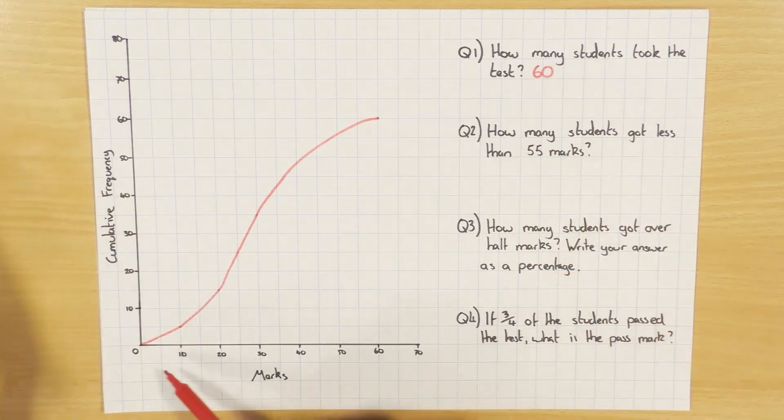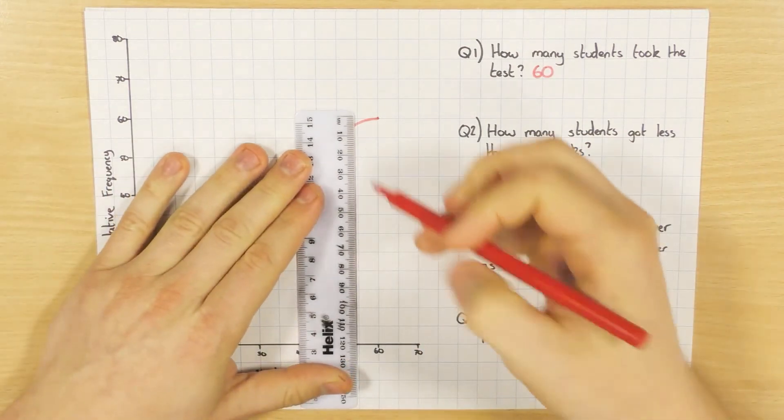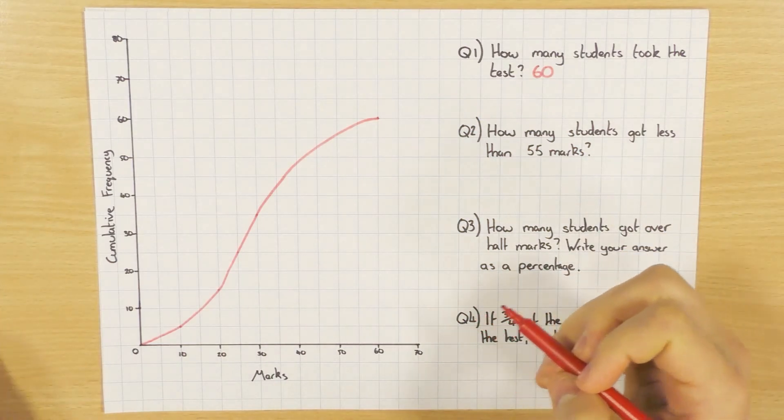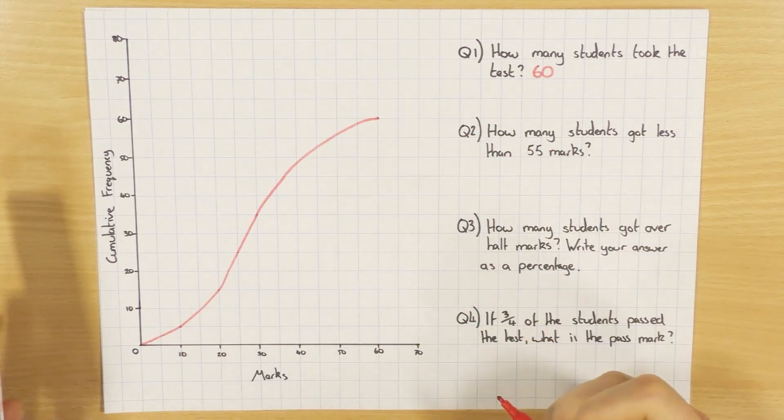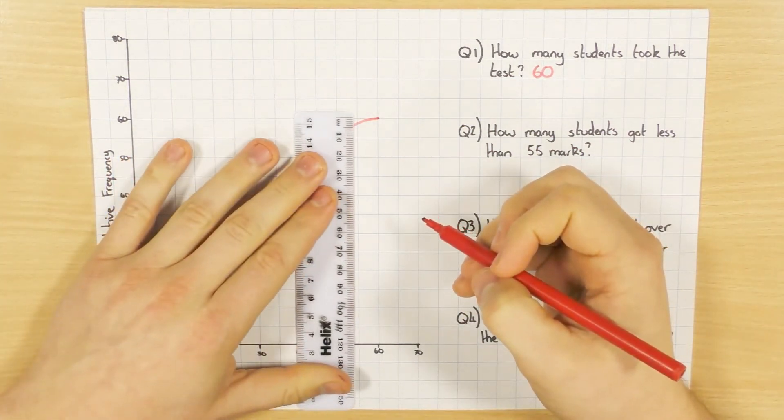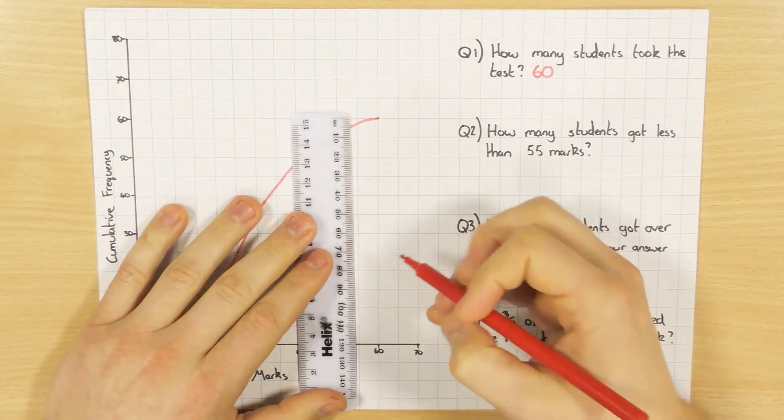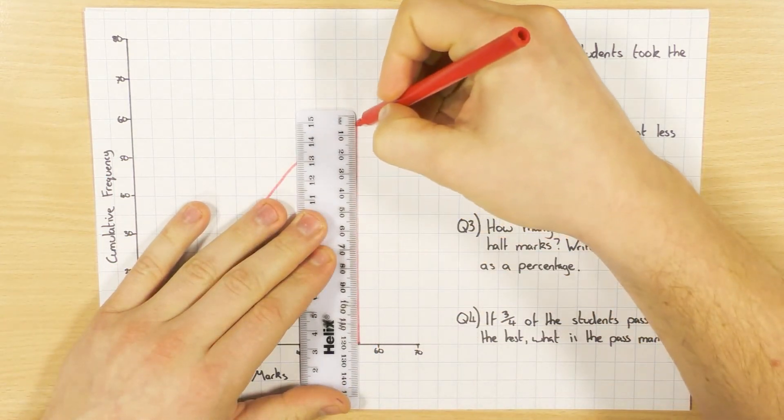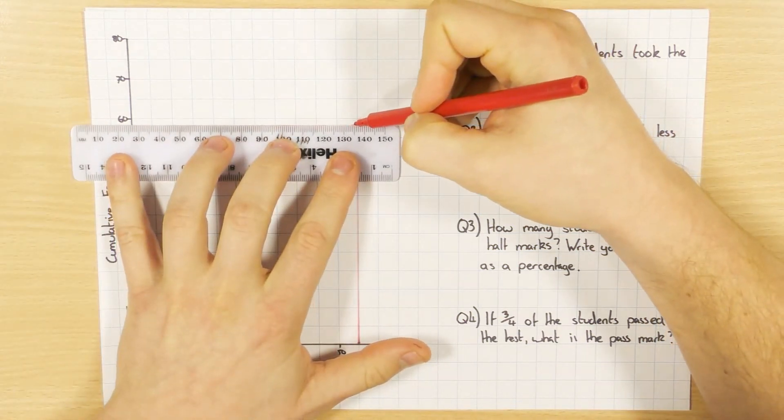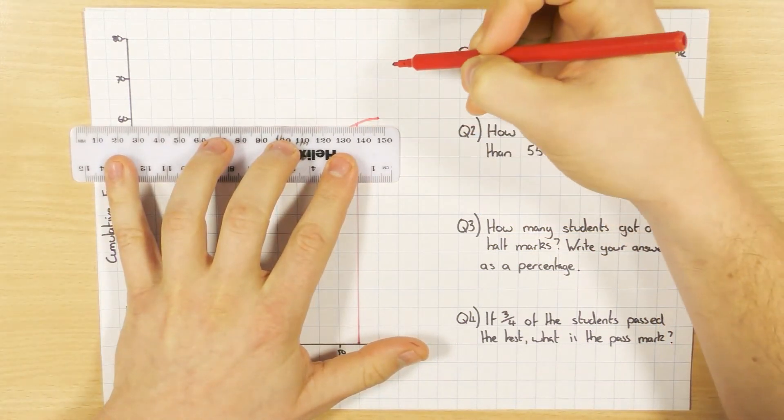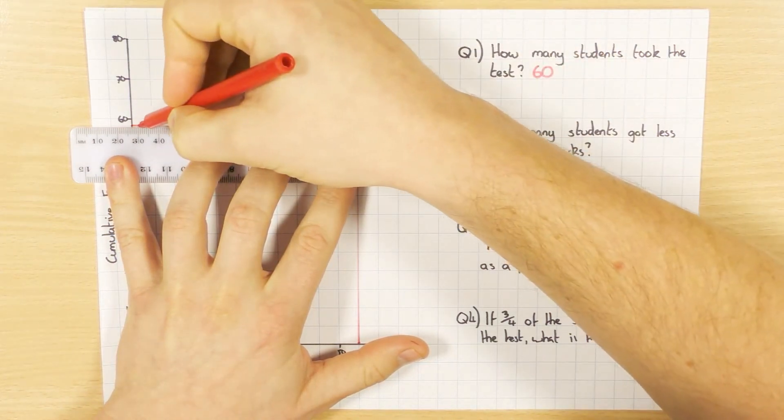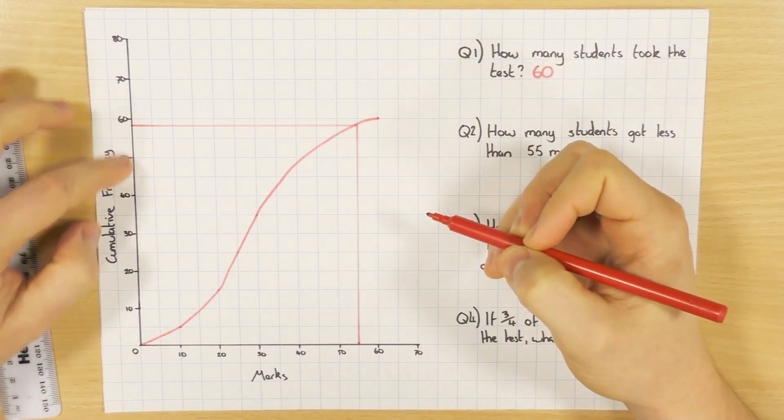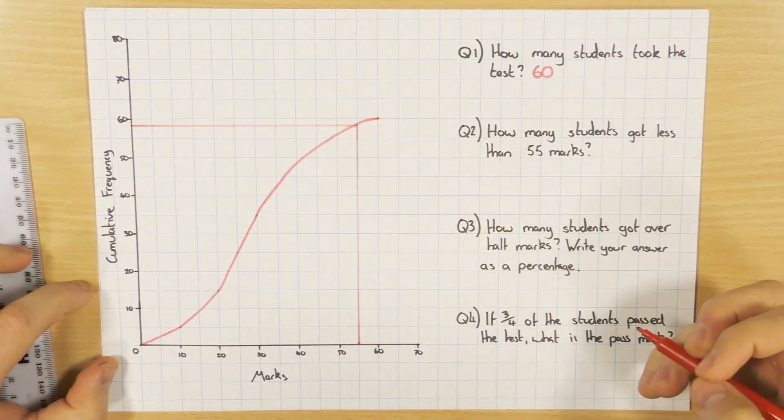How many students got less than 55 marks? Right, so here's the marks on the x-axis. So I go to 55, and I go up, and then I can go across like so. So how many people got less than 55 marks? There we go, it's about 58.